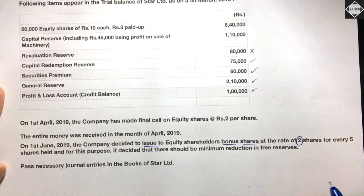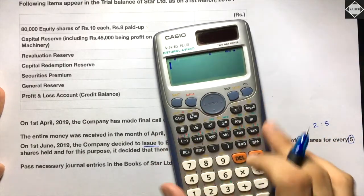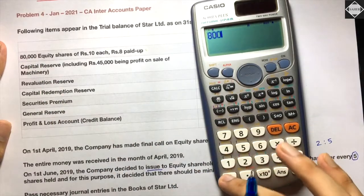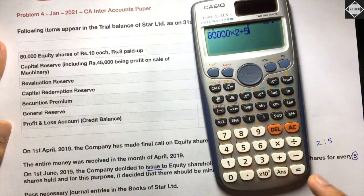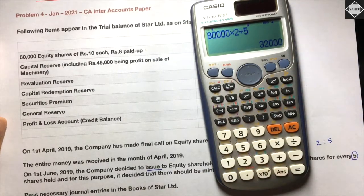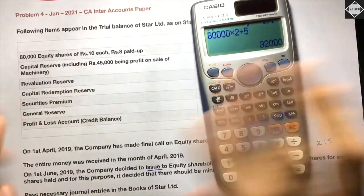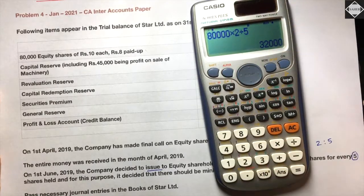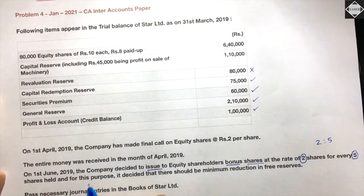The bonus ratio is two shares for every five shares held. Existing shares are 80,000. So 80,000 × 2/5 = 32,000 new bonus shares. If you hold five shares in the company, you will be given two additional shares. So 32,000 new bonus shares will come into the picture.